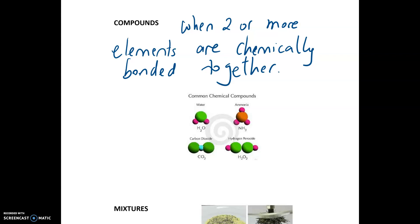If you look at the first one, water, it's a compound because it's got hydrogen and oxygen elements in there and the ratio is two to one, so two hydrogen and one oxygen. If you look at ammonia, it's nitrogen and hydrogen. If you look at carbon dioxide, it's made of carbon and oxygen. Finally, hydrogen peroxide is made of hydrogen and oxygen. So again, compounds are where elements are chemically bonded.